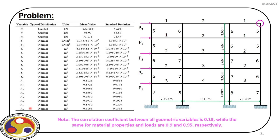Different random variables are also correlated with different correlation coefficients. The geometric variables — A and I — have a correlation coefficient of 0.13, while the material properties E1 and E2 have a correlation of 0.9, and the loads P1, P2, P3 have a correlation of 0.95.